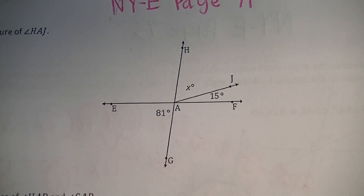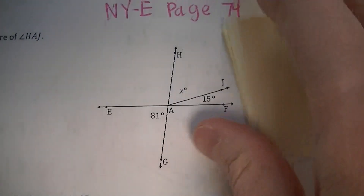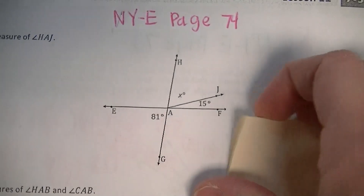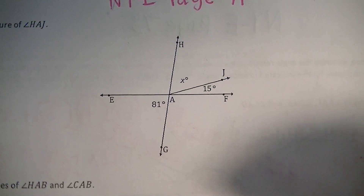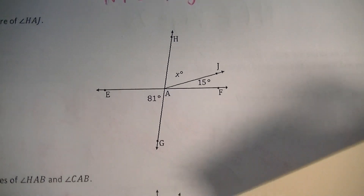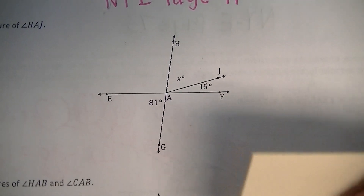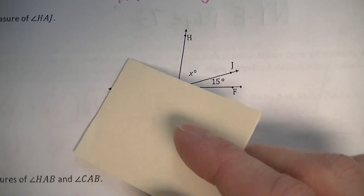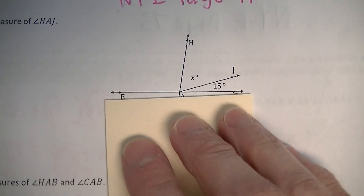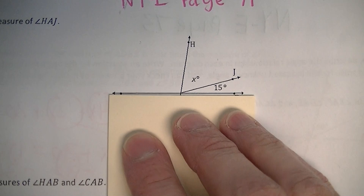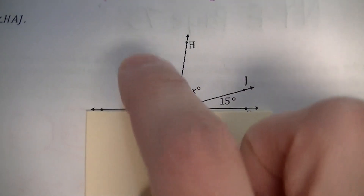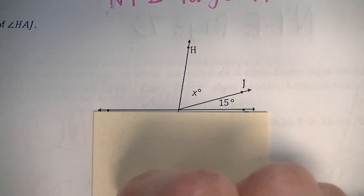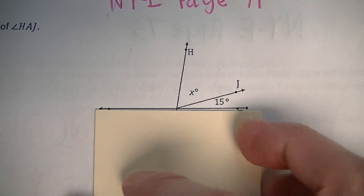Since we're supposed to find the measurement of it, I'm going to try to see what kind of relationships between the angles I can use to help me out. Those three angles would be angles on a line, however I don't know the measurement of that angle, so that doesn't help me.